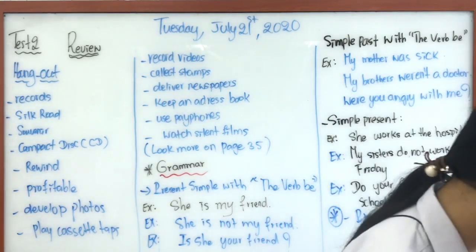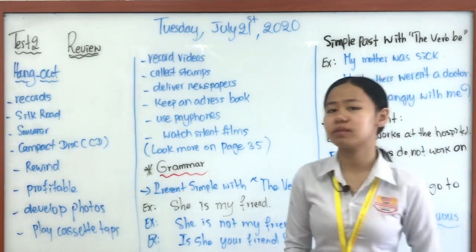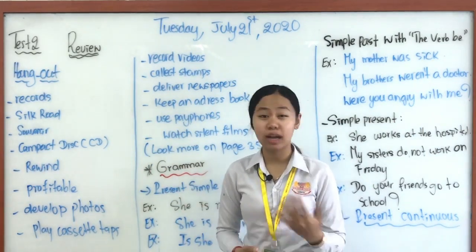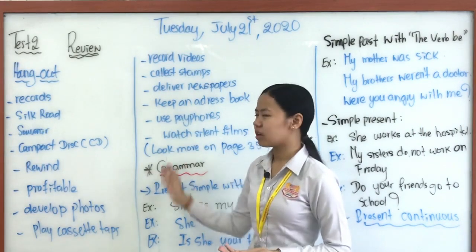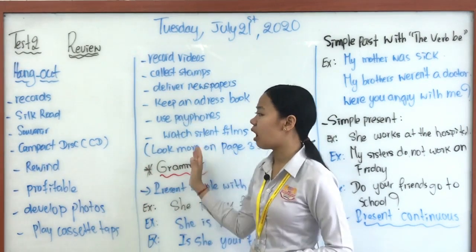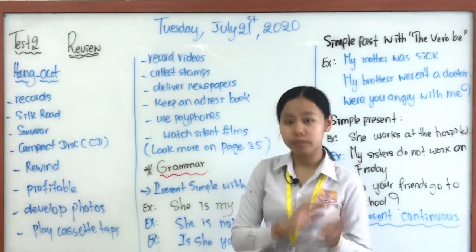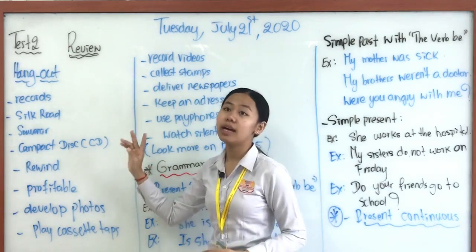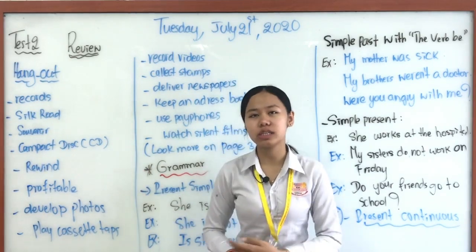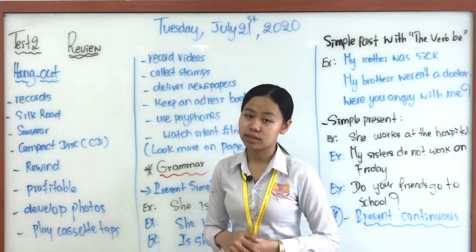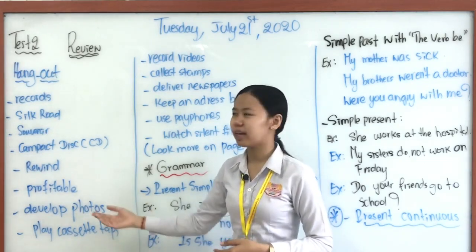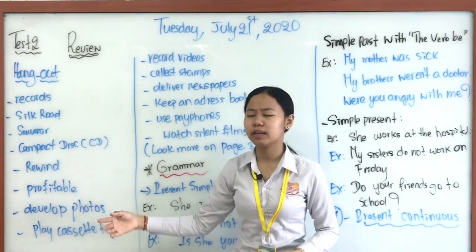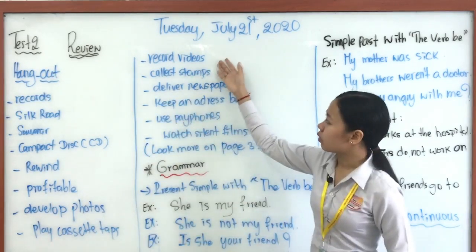For the hangout vocabulary, you can look at your own textbook. Teacher wrote down some words like 'record,' 'silver' — which is in our reading — 'souvenir,' 'compact,' and these also appear in our reading. Teacher wrote down the definitions, so try to review them. Also review 'advice,' 'profitable,' and words related to the Silk Road reading: 'develop,' 'photo,' 'play cassette tapes,' 'record video.'